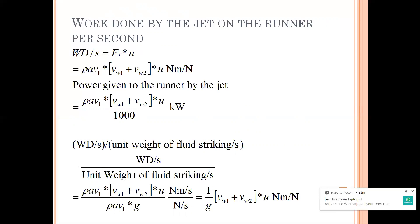Your power formula is the rate of doing work — work done per second — and the unit of power is kilowatt. Next is the work done per second per unit weight of fluid striking per second. We are dividing by the weight, which is given by rho * A * v1 * g. If you simplify, I'll be getting (1/g) * (vw1 + vw2) * u newton-meter per second.